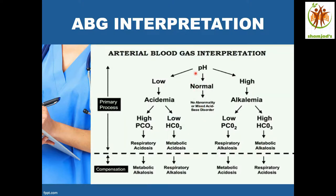Looking at the diagram: if pH is normal and everything is normal, there are no abnormalities. If the pH is low, it is acidemia. Look at the PCO2 — if it is high, it is respiratory acidosis; if the bicarbonate is low, it is metabolic acidosis. Respiratory acidosis is compensated with metabolic alkalosis — respiratory acidosis is acid, and metabolic alkalosis is alkaline to get it neutralized. Metabolic acidosis is compensated with respiratory alkalosis.